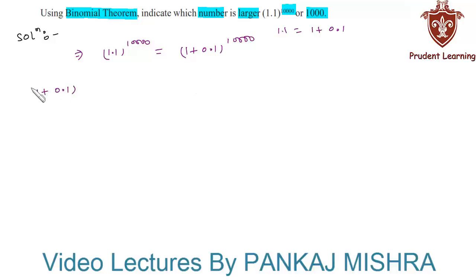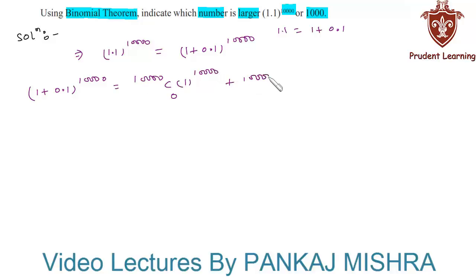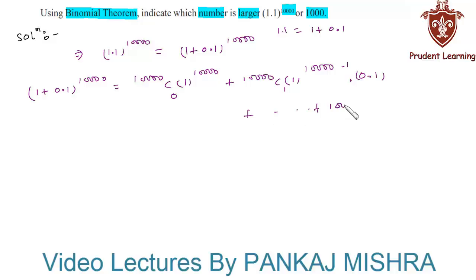Expanding (1 + 0.1)^10,000 using the Binomial Theorem gives: 10,000C0 × 1^10,000 + 10,000C1 × 1^(10,000−1) × 0.1, and so on, up to 10,000C10,000 × 0.1^10,000.